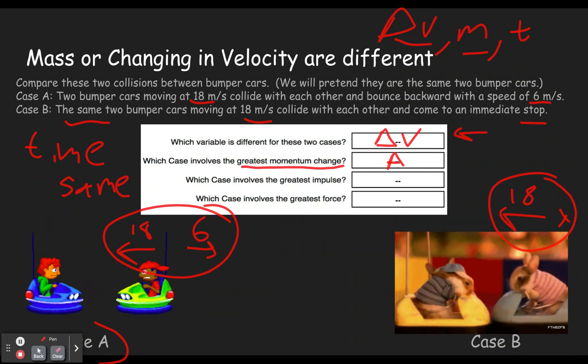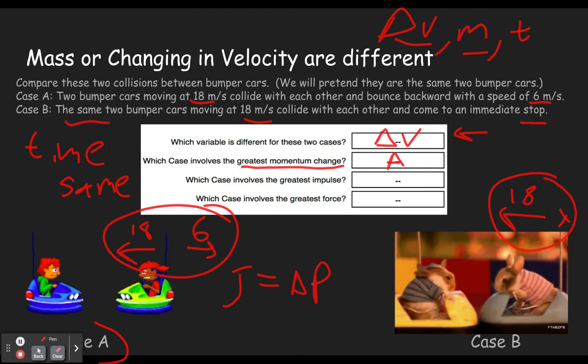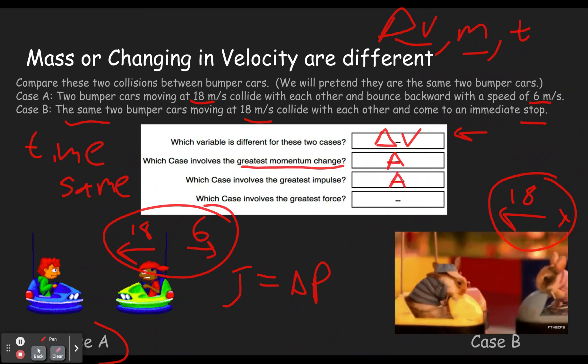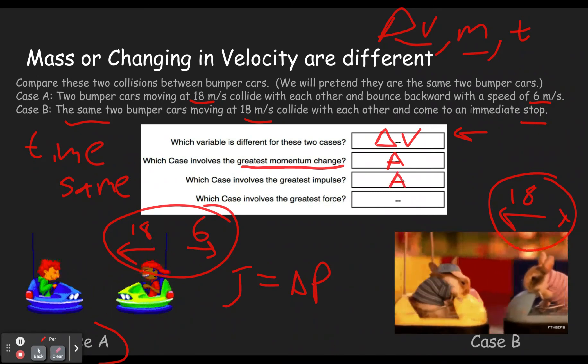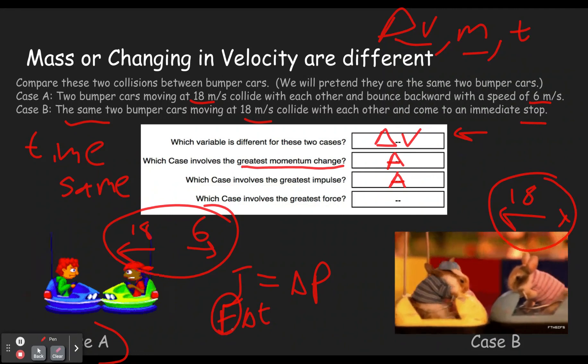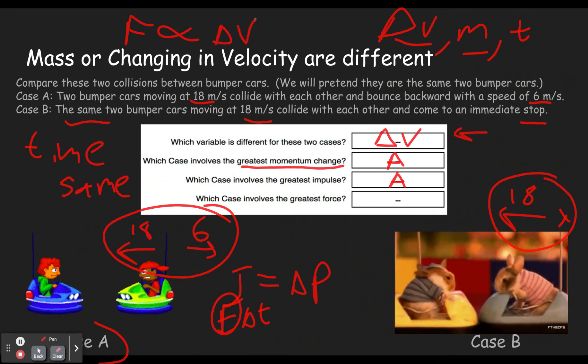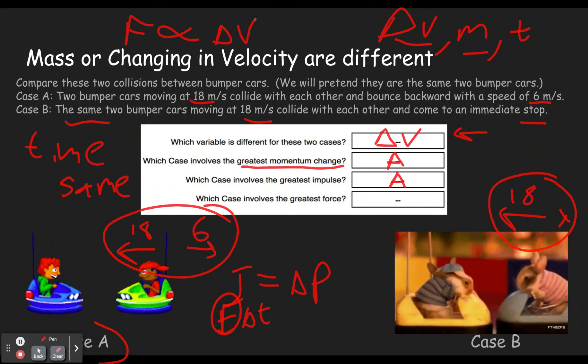Which case involves the greatest impulse? Well, we know that impulse J equals the change in momentum. It's causing it. It's not that they're the same thing, but the values will be equal. So if the change in momentum is bigger for A, it must have had a bigger impulse. Which case involves the greatest force? Well, if J is bigger, and we know T has been the same, then the reason J is bigger is because F is bigger. Or you could go back to the fact that the force is directly proportional to the change in velocity. Remember, you only see proportionalities when everything else is held constant, which you do here. So since A had the bigger impulse, then A must have also had the bigger force.